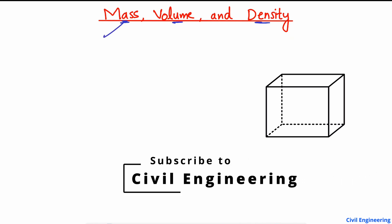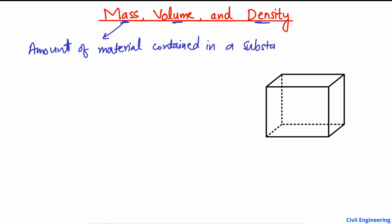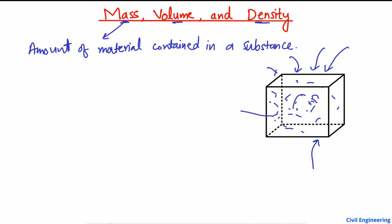We are going to start with mass. Mass is very simple — it is basically the amount of matter contained in a substance. For example, if I consider this jar or square container, when you pour concrete, cement, or water into it and it is full, the amount of this material inside the object will be known as the mass.